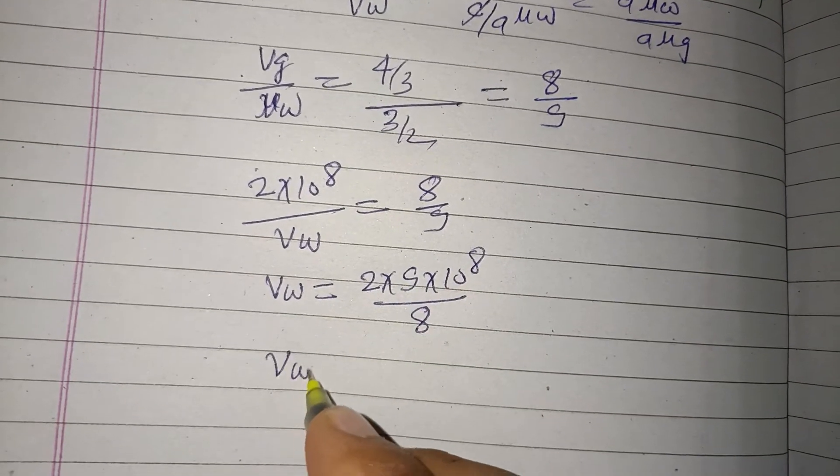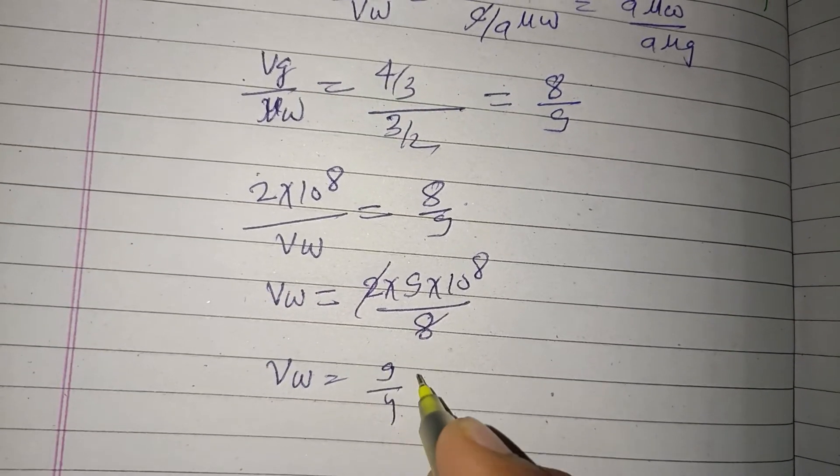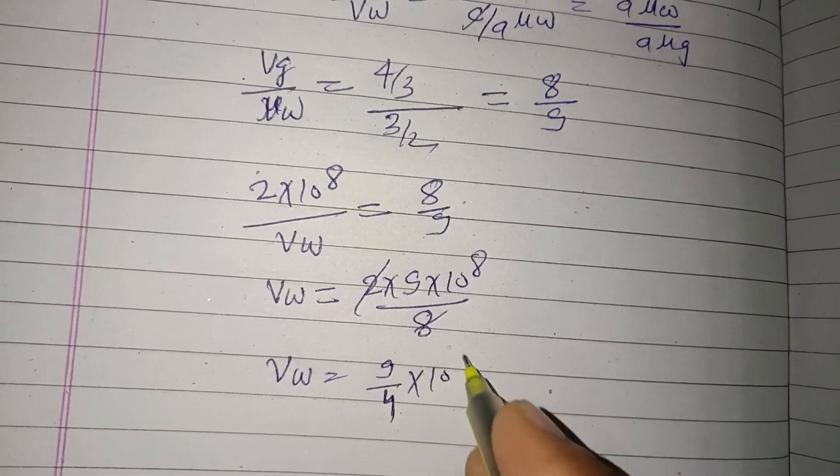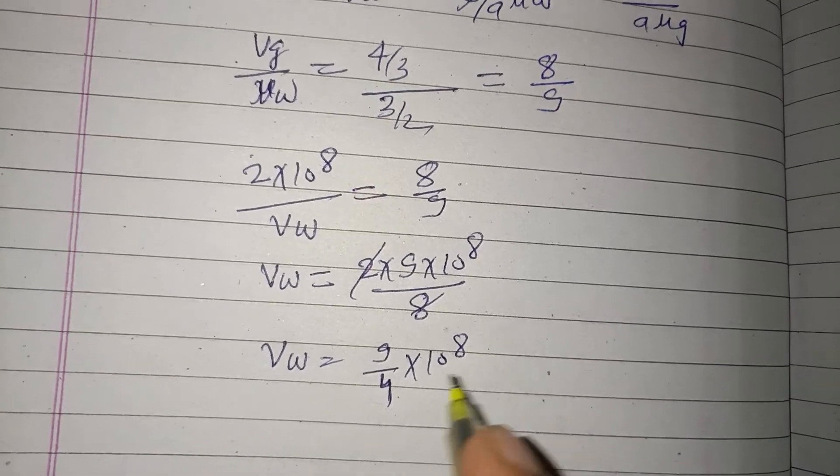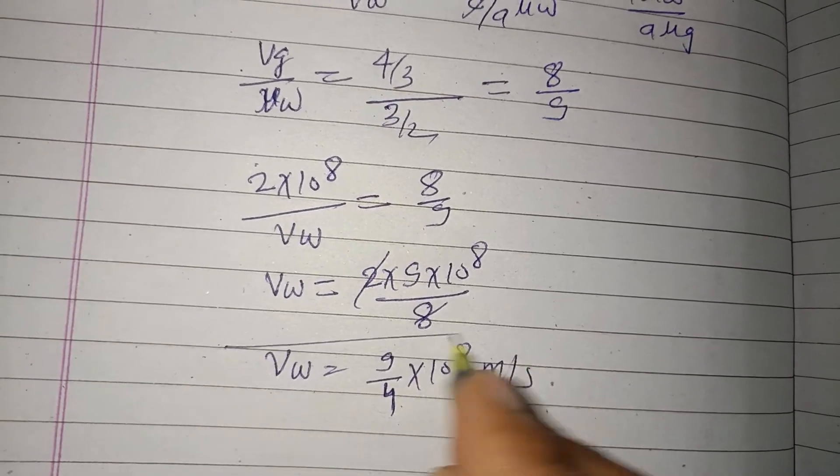So vw equals 9 upon 4 into 10 to the power 8 meter per second is the velocity in water.